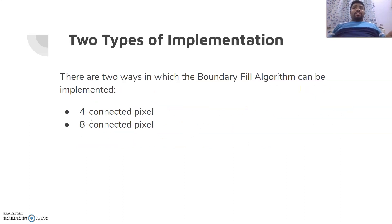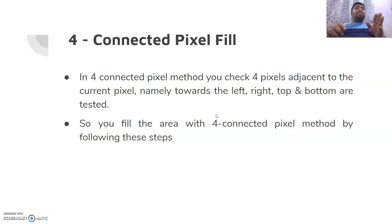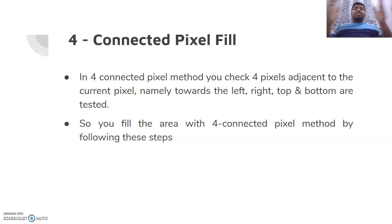There are two types of implementation: four-way connected pixel and eight-way connected pixel. In four-way connected pixel, whenever we are filling a particular pixel it checks the adjacent pixels — the left one, the right one, the top one, and the bottom one. As soon as these neighbors are tested, the same thing works on the neighbors as well. If they are not the fill color and not the boundary color, we fill them with the new fill color.